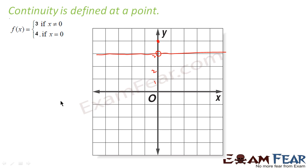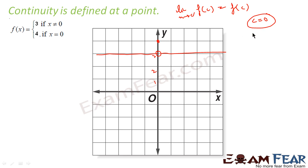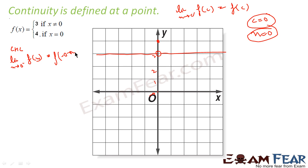Looking at the graph, we can tell it is discontinuous because I have to lift my pen to draw it. But mathematically, we check if limit as x tends to 0 of f(x) equals f(0). Let's find the left-hand limit: limit as x tends to 0⁻ of f(x). Taking a value just less than 0, such as −0.0001, for x ≠ 0 the function gives 3. So the left-hand limit is 3.